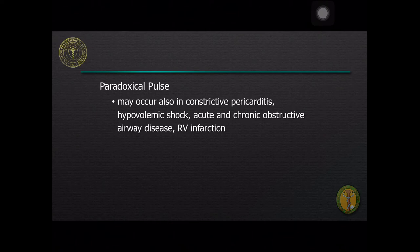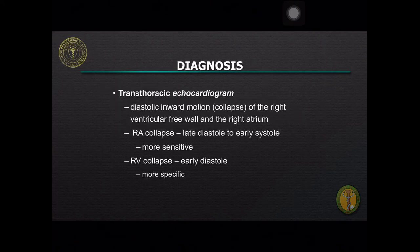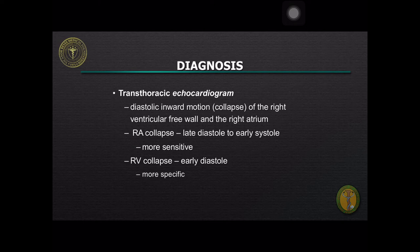Paradoxical pulse may also occur in constrictive pericarditis, hypovolemic shock, acute and chronic airway disease, and right ventricular infarction. Prompt diagnosis of cardiac tamponade is life-saving if immediate treatment is done. The diagnosis can be established by transthoracic echo, which will show diastolic collapse of the right atrium and right ventricle. Right atrium collapse is more sensitive while right ventricular collapse is more specific for the diagnosis of cardiac tamponade.